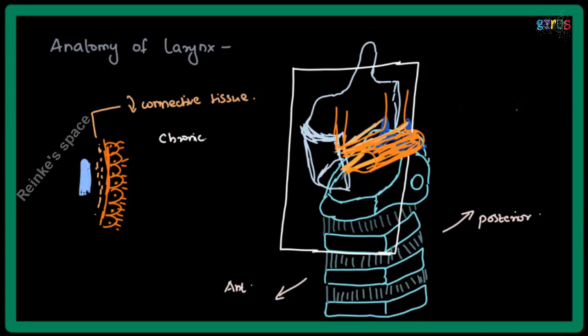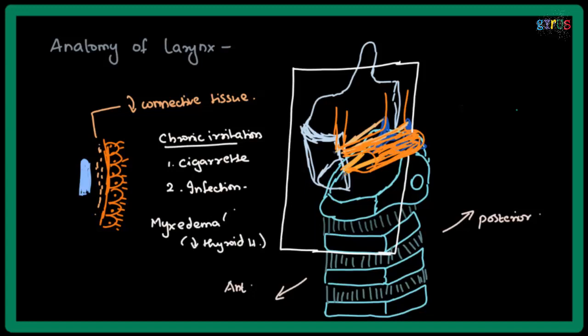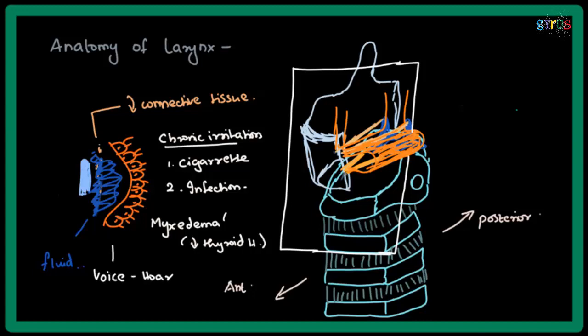In case of chronic irritation, that can be caused by cigarette smoking or any local infection or even in the case of myxedema (reduced thyroid hormone), fluid will be collected within this layer. As a result, there will be swelling of this layer which makes it difficult for the membrane to vibrate and may cause hoarseness of the voice.